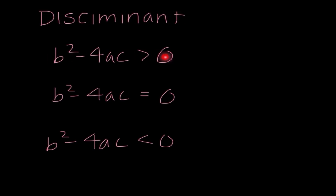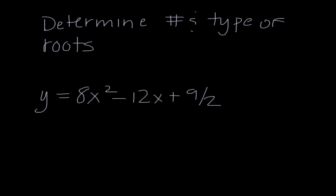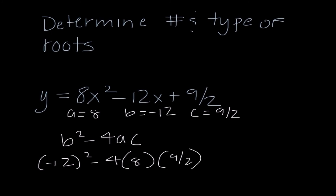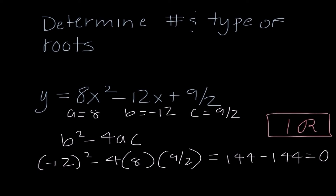Our next concept is the discriminant. When the discriminant is positive, we have two real solutions. When it equals 0, we have one real solution. When it is less than 0, we have two imaginary solutions. To determine the number and type of roots: a is 8, b is negative 12, c is 9 halves. So b squared minus 4ac gives negative 12 squared minus 4 times 8 times 9 over 2, which is 144 minus 144, equaling 0. So the answer is 1 real solution. What matters is this conclusion — the value just tells us the type of solutions.